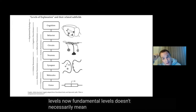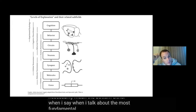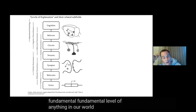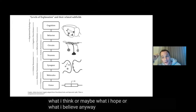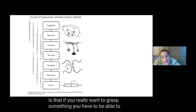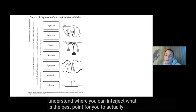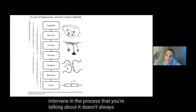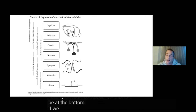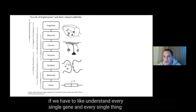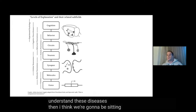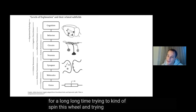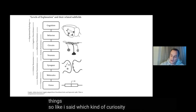Fundamental levels doesn't necessarily mean the bottom. When I talk about the most fundamental level of anything in our world, I don't think we need to understand every single detail to understand the whole. What I believe is that if you really want to grasp something, you have to understand where you can interject — what is the best point to actually intervene in the process. It doesn't always have to be at the bottom. If we have to understand every single gene, every single RNA strand, every single protein before we understand these diseases, then we're going to be sitting here for a very long time spinning this wheel. So which kinds of heuristics can we apply?